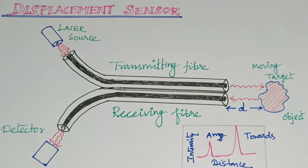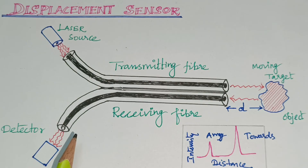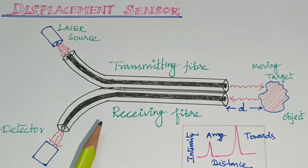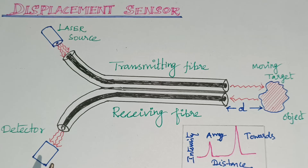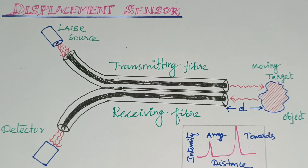What are the applications of this Displacement Sensor? The Aerospace Industry uses it. Machine Automation uses it. Ramp and Bridge Position monitoring uses it — determining how far a distance is from the Displacement Sensor.